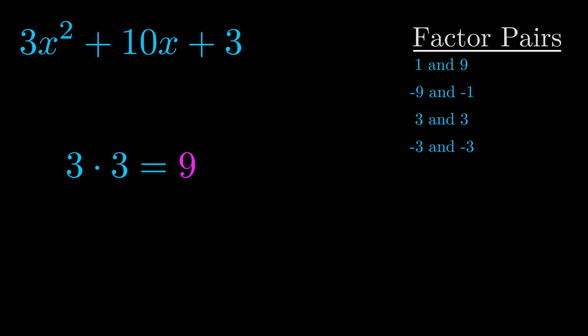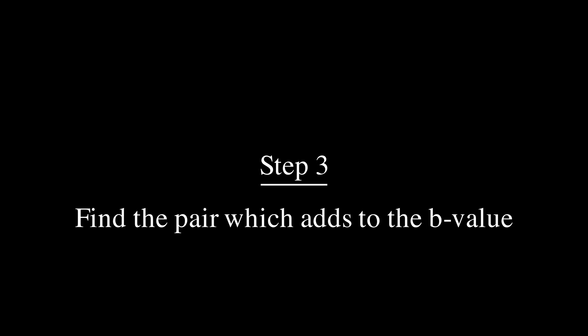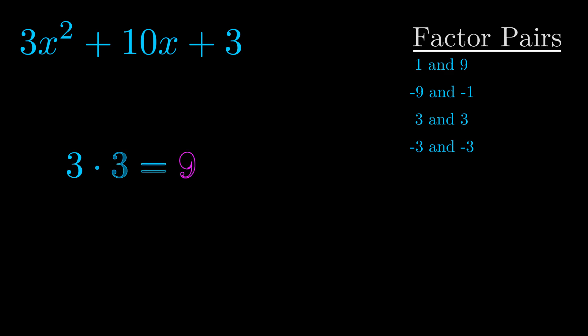Now once you have these factor pairs, the goal is to find which of these pairs adds to the b value. The b value is the coefficient on the x term, that's the middle term, the one that we haven't done anything with yet. And really this is the only factor pair that we need.